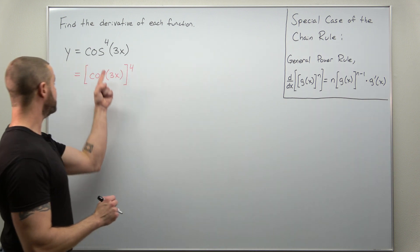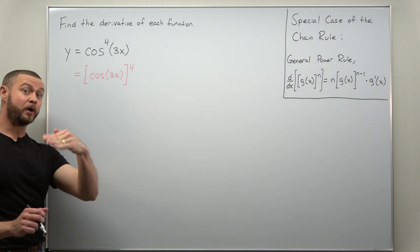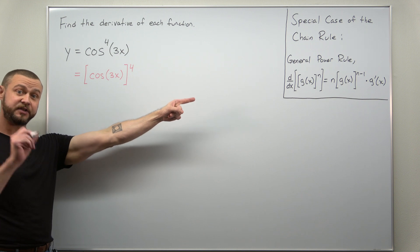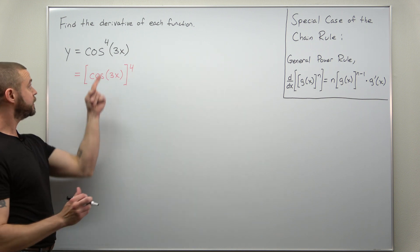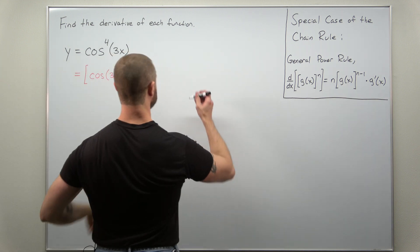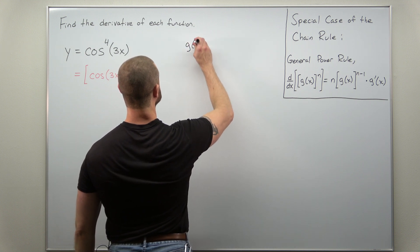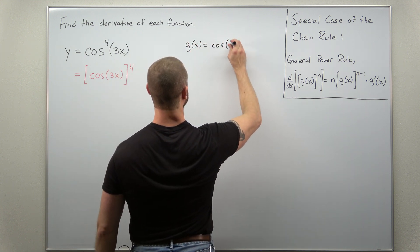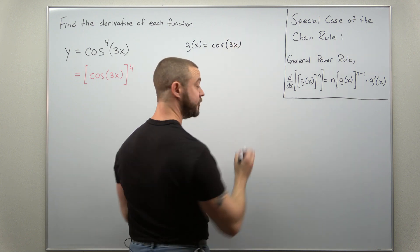So let's go ahead and get started by first identifying what the inner function is here, what the g of x is for the general power rule. And if we take a look at this written here, our inner function g(x) is just cosine of 3x.